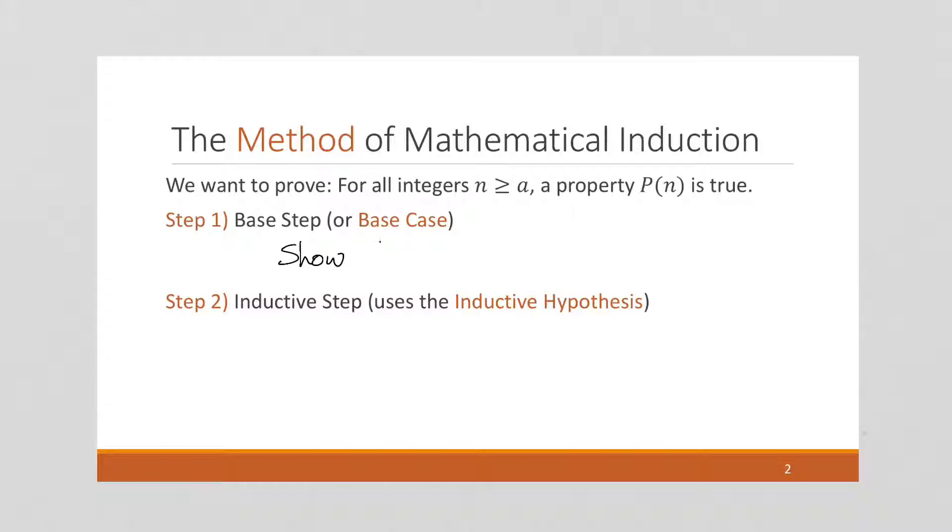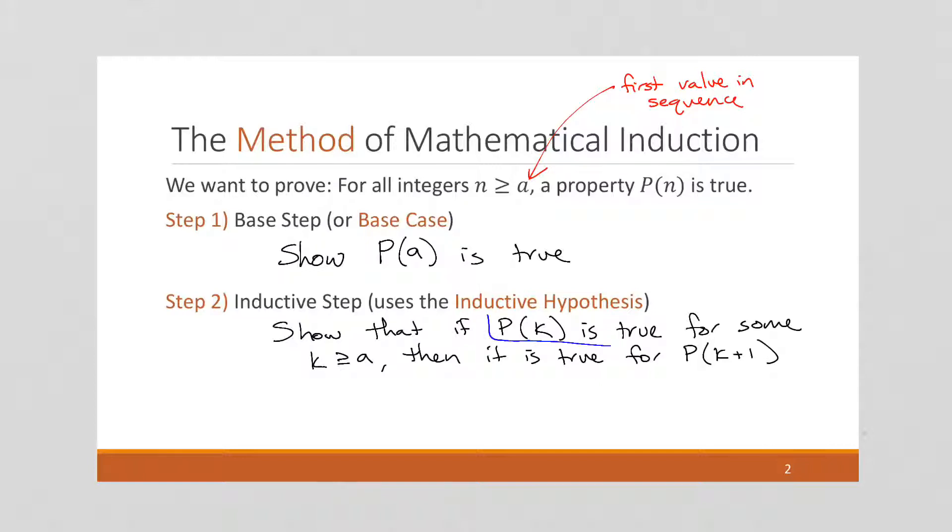We want to show that the property we're trying to prove is true for the first value in our sequence. And then our inductive step is to show that if the property is true for some k value in our sequence, then it is true for p of k plus 1. We're going to suppose this part in our inductive hypothesis, and we are going to deduce this part, or show this part.